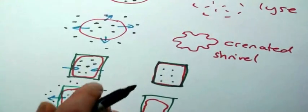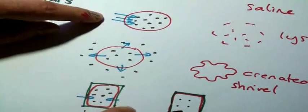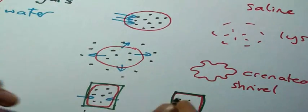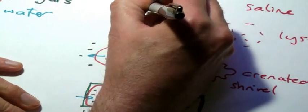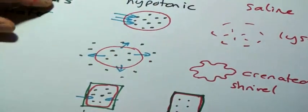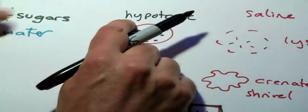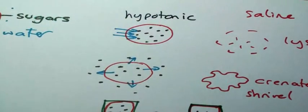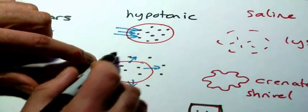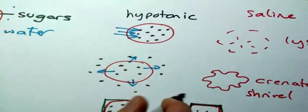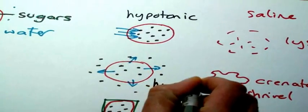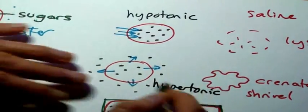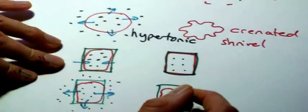A couple of words for us to be aware of. This situation, this first situation where water is going into the cell, we would say that the liquid on the outside is hypotonic. Hypo meaning less, so less concentrated than the inside. If the solution is more salty or more sugar on the outside, it's called hypertonic. Hyper means above or over. Above the concentration, over the concentration.